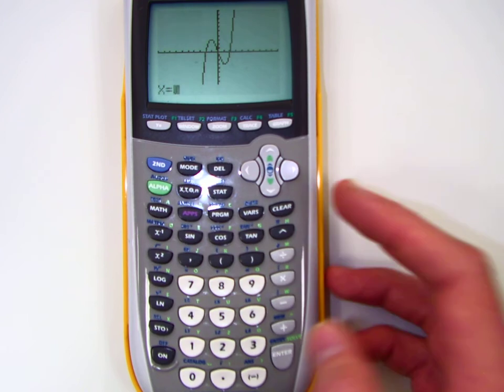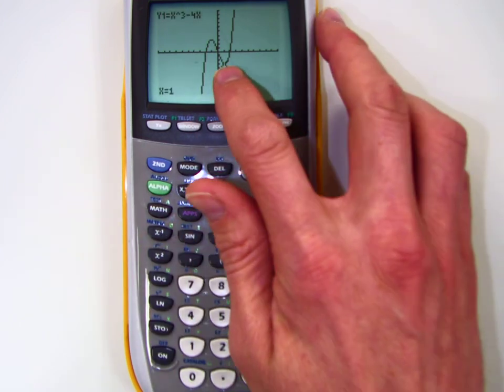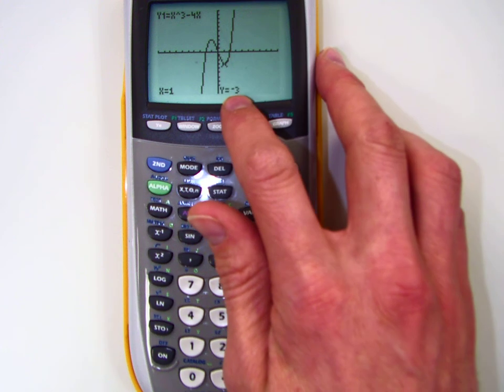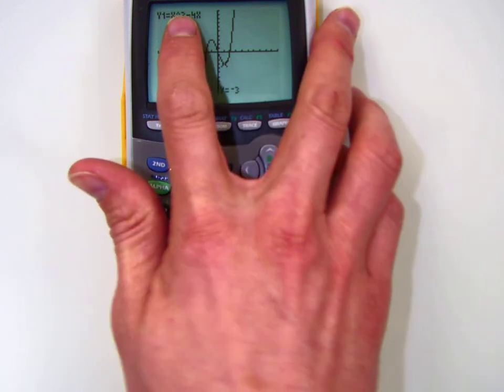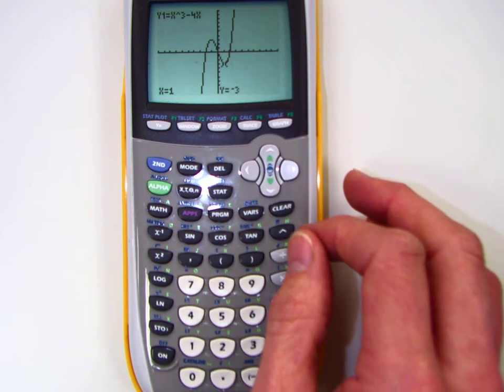For instance, if I hit that and then say I put in one. What that's saying is, see where it's blinking right there? That's x is one. The value of that is negative three. That's the function. So for this function, at one, the value is negative three.